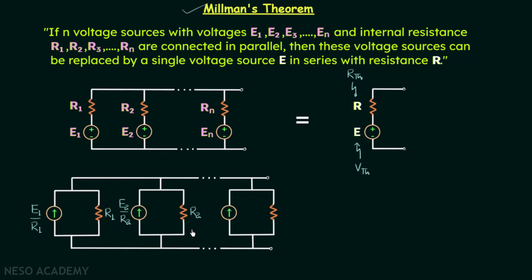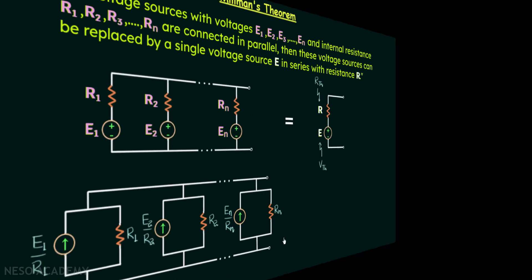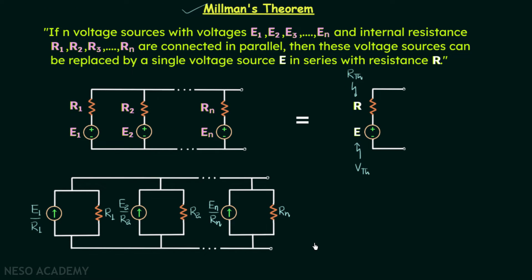Similarly, we transform all other branches. The final Nth branch will have a current source equal to En/Rn with resistance Rn. We are done with the modification and now move on to calculating Norton's equivalent current In and resistance Rn. To find In, we short the two terminals and assign the current In. Pause and try to find In on your own.